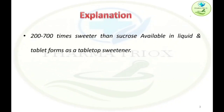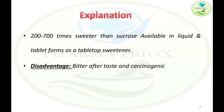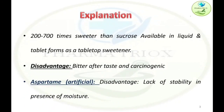Saccharin was discovered by Ramson and Fahlberg in 1879 and it is the oldest artificial sweetener. It is 200 to 700 times sweeter than sucrose and is available in liquid and tablet forms as a tabletop sweetener. It has disadvantages like bitter aftertaste and is carcinogenic, so it is not widely used in pharmaceutical formulations. Another artificial sweetener, aspartame, has the disadvantage of lacking stability in the presence of moisture.